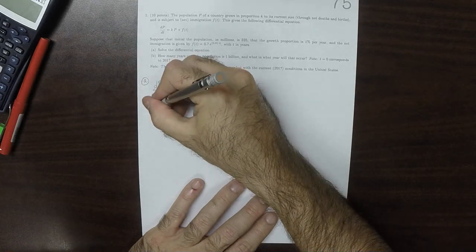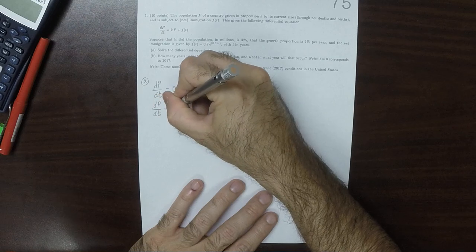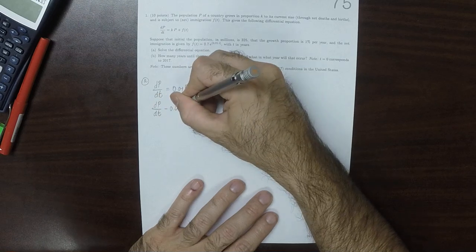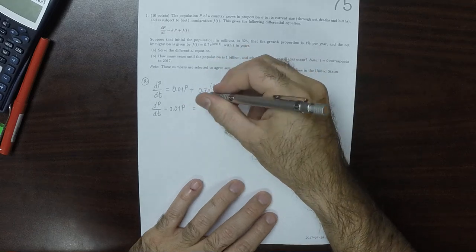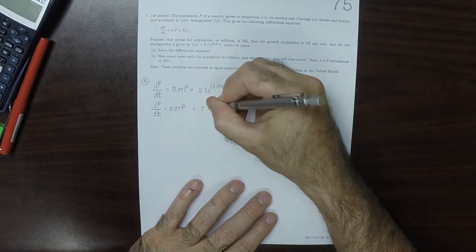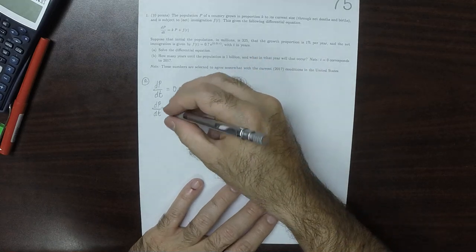Putting it in the standard way for an integrating factor, that would be dp/dt - 0.01p = 0.7e^(0.01t). So the integrating factor...